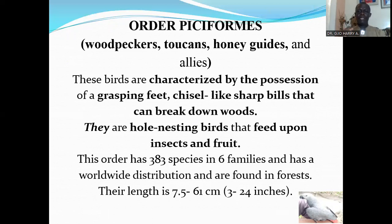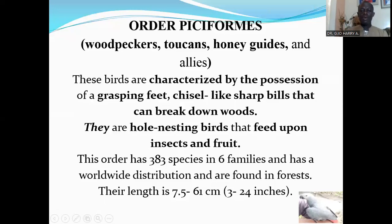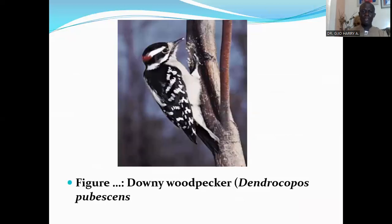Piciformes possess chisel-like sharp bills that can peck on wood to create holes. They are hole-nesting birds that feed upon insects and fruit. This order has 383 species in six families and has a worldwide distribution, found in forests. Their length is 7.5 to 61 centimeters, that's 3 to 24 inches. Here is the downy woodpecker already pecking wood to create a hole.